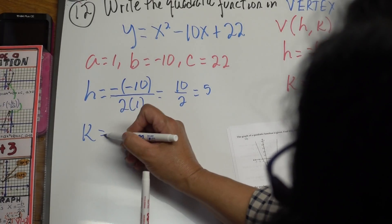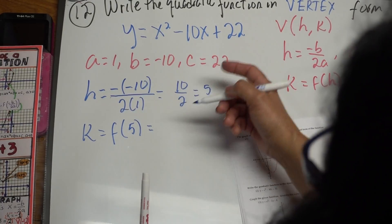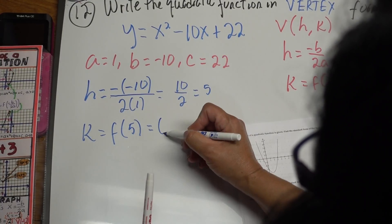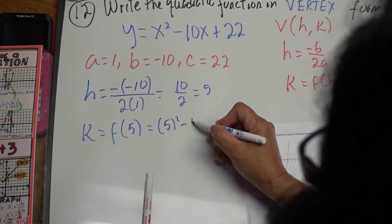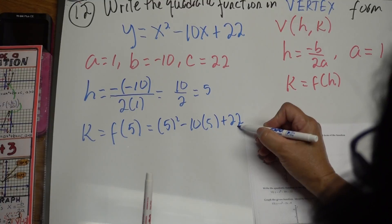k is f of h, so f of 5. So just plug it in the standard form that is given. So it's 5 squared minus 10 times 5 plus 22.